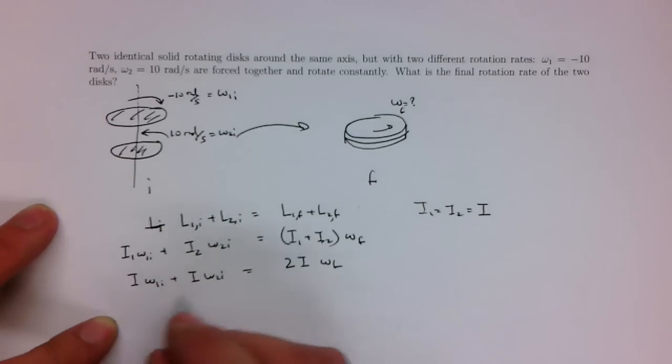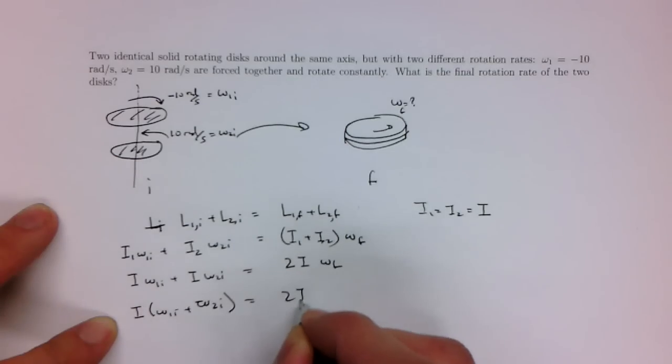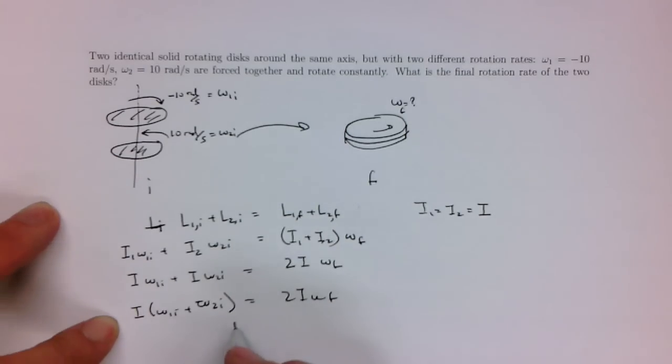So then this becomes just basically I of omega 1 initial plus omega 2 initial is equal to 2I omega final.